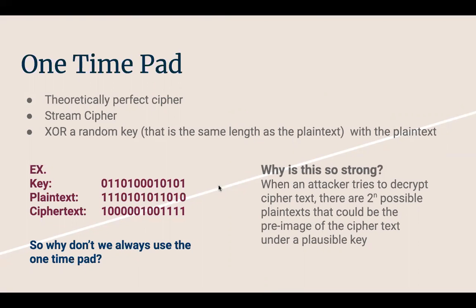In the one-time pad, the key is a random binary string that you XOR to get the ciphertext. It's extremely strong because even if an attacker intercepts the ciphertext, there are 2^n possible plain texts that could be the pre-image of the ciphertext under a plausible key. Every possible plain text for that number of bits is possible under the right key, since the key is just as long and XORing it gives every possible combination.